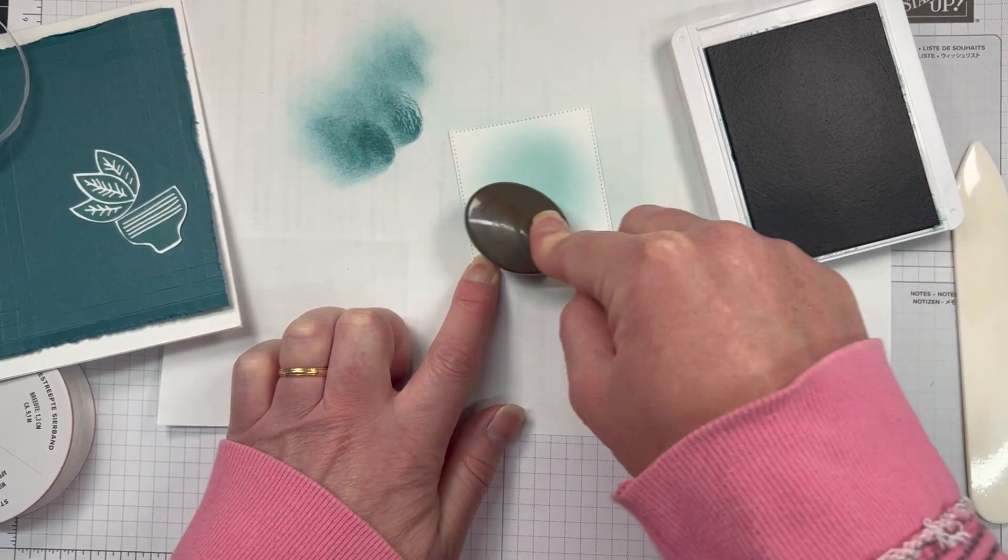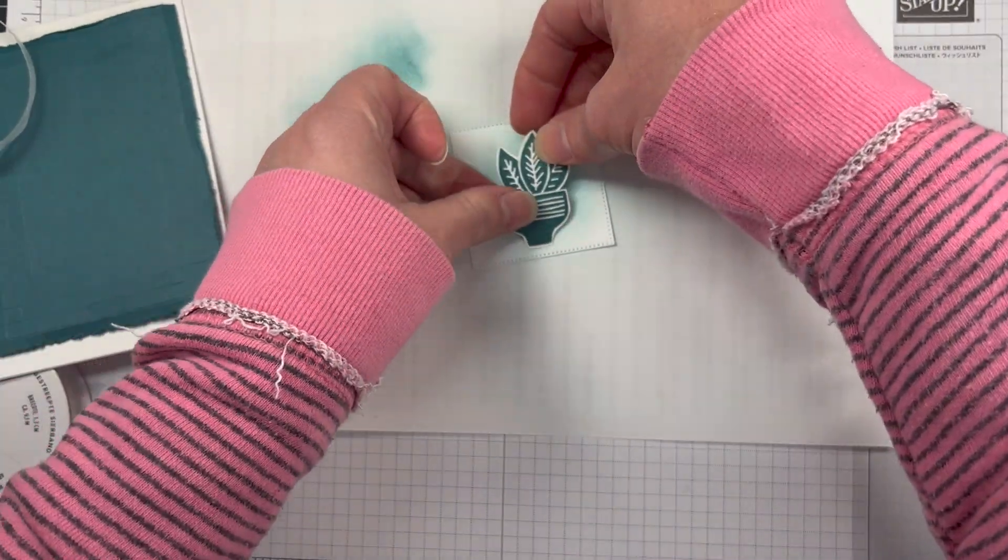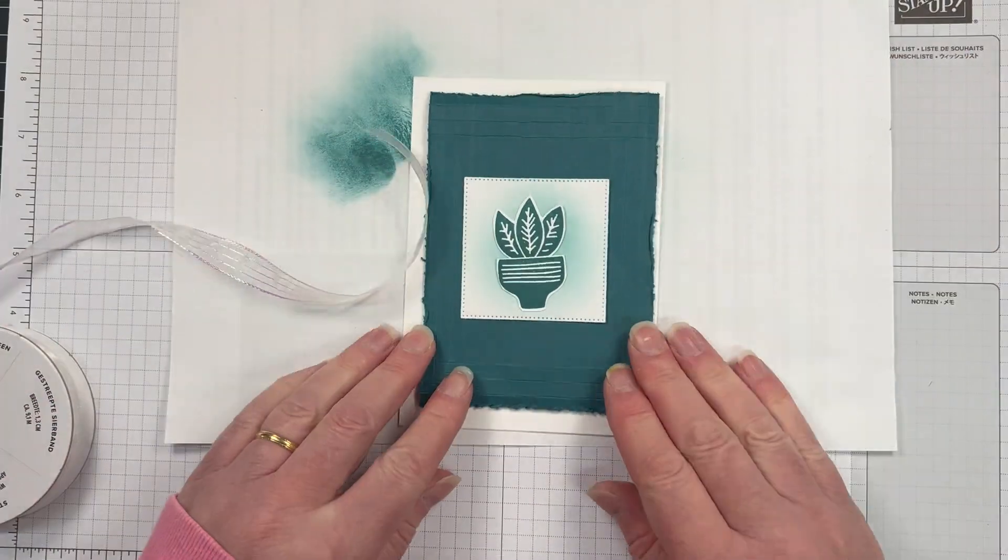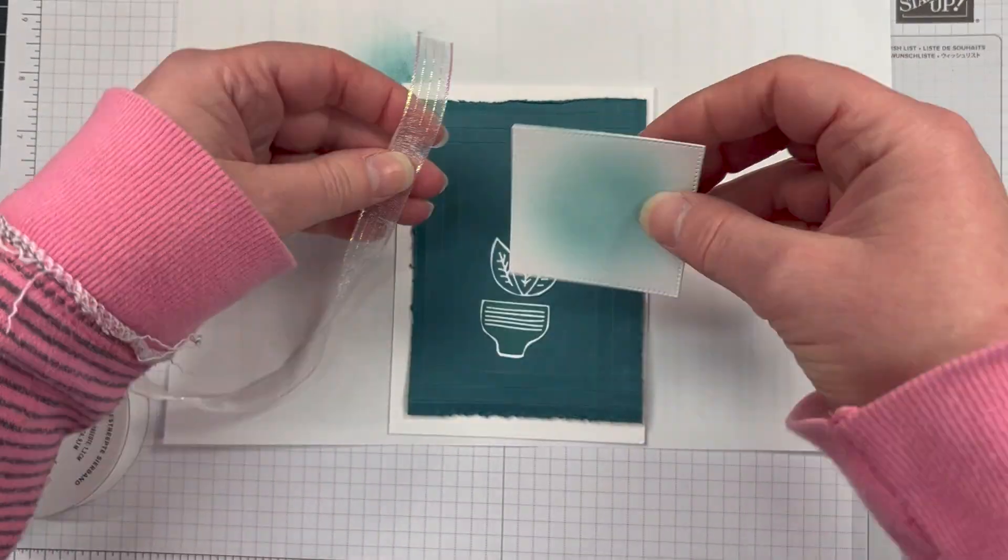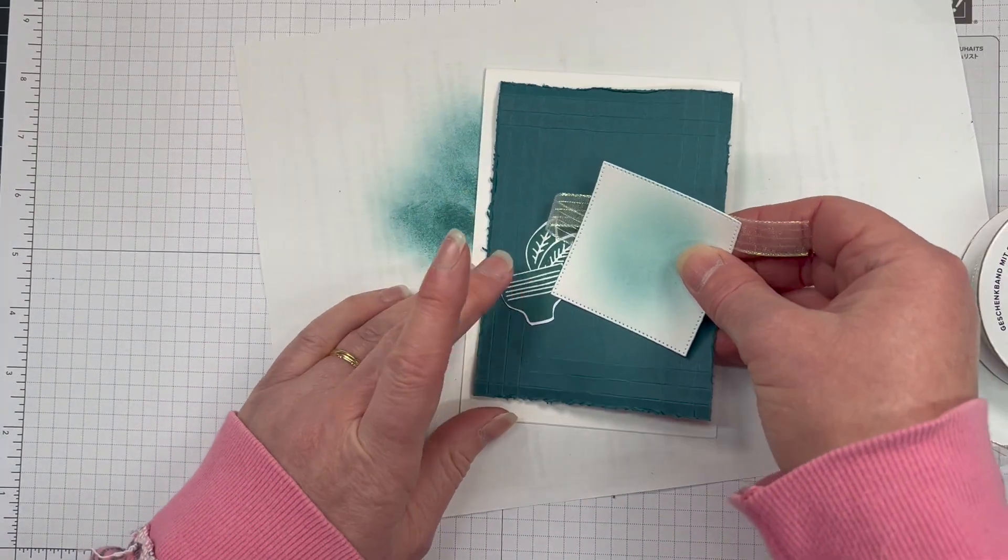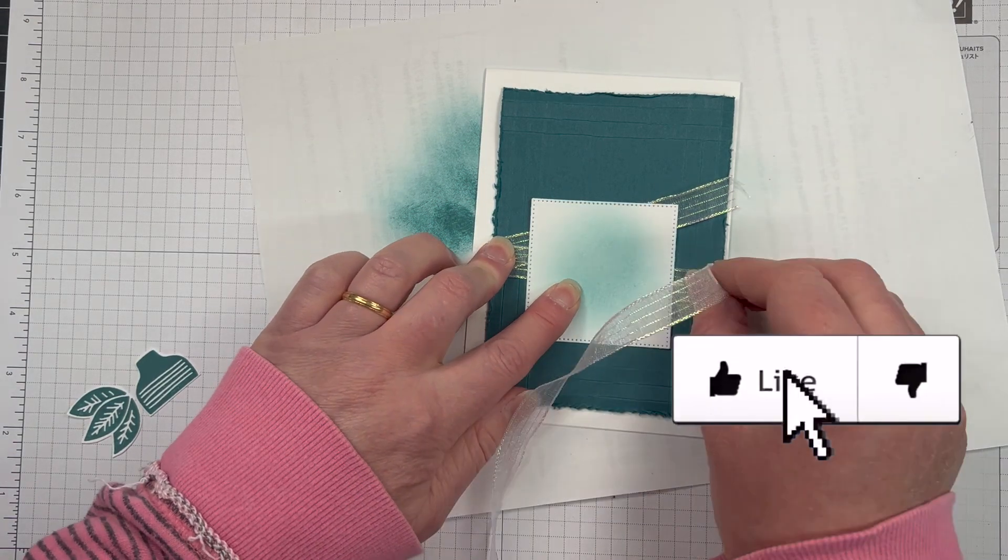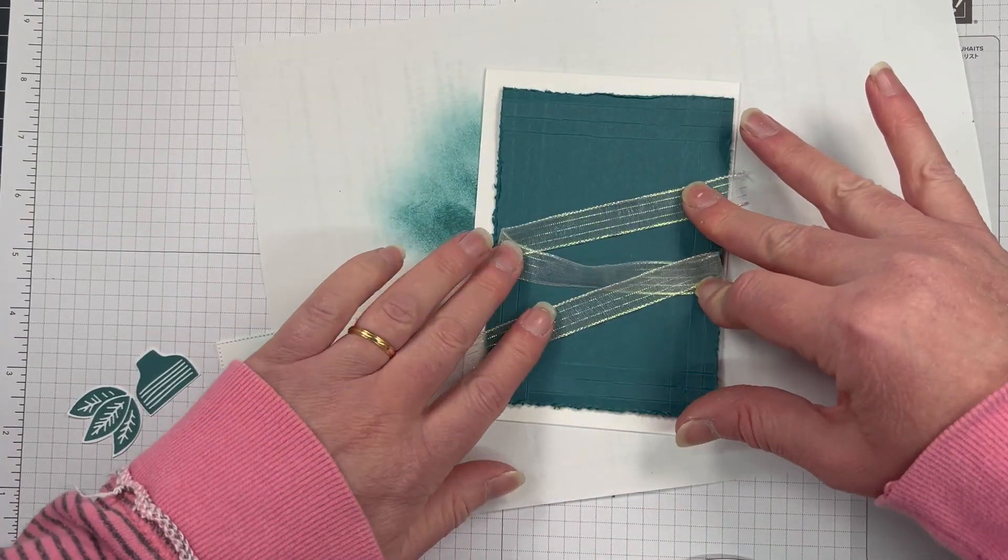And I have my blending brushes where I'm just adding a little bit of that Pretty Peacock ink to that background, so it sort of makes that pop off a little bit more. I'm just looking through my catalog to see what the exact name for that ribbon is—iridescent half-inch striped trim is what it's called.